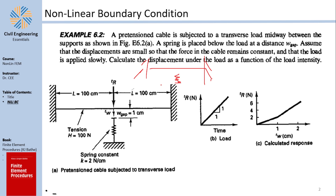The cable is suspended above a gap in mid-air, and there is a spring below it. If there is no force, the cable is perfectly suspended and there is no problem. However, when we push down with a force, the cable will displace downward — like pushing a rubber band down. This is the source of non-linearity: if the cable doesn't touch the spring there is one behavior, and if it touches the spring there is another. The gap is 1 centimeter and the spring stiffness is 2 N/cm.